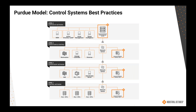Above that in level three is where higher-function servers like data historians, network services, and authentication services like domain controllers or other authentication servers reside. Level four is the corporate network, which is really outside of the control system itself, but is often a consumer of the control system data or provides a higher-level input.